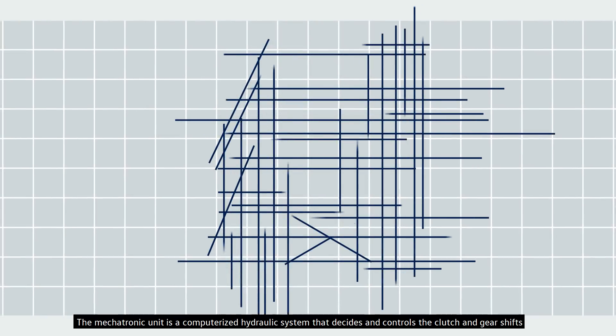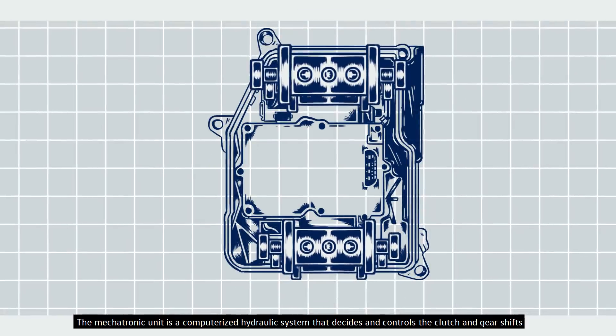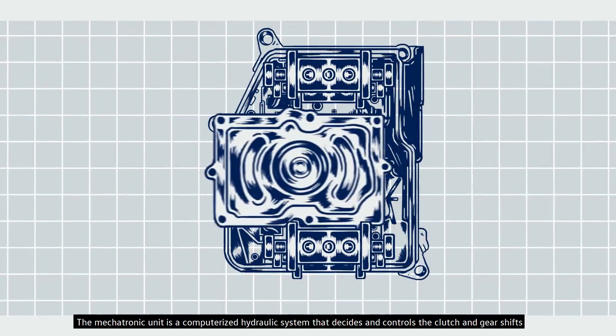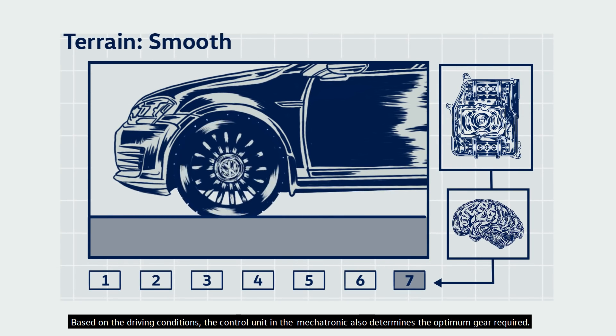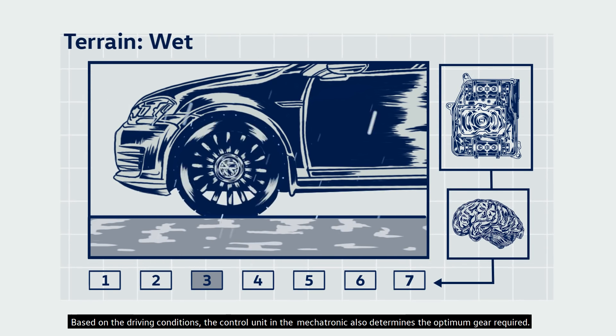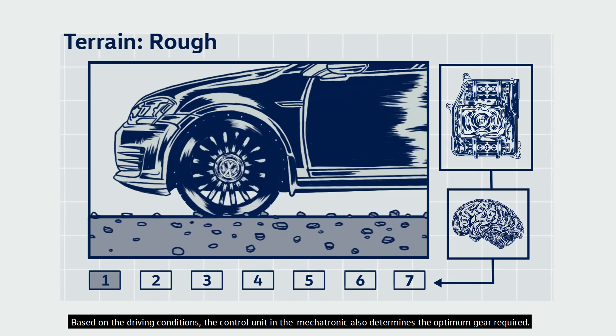The mechatronic unit is a computerized hydraulic system that decides and controls the clutch and gear shifts. Based on the driving conditions, the control unit in the mechatronic also determines the optimum gear required.